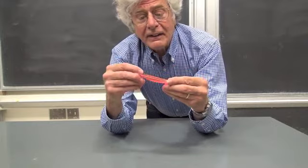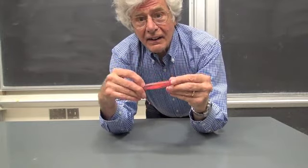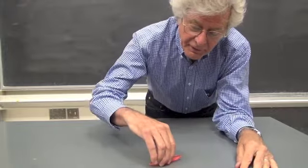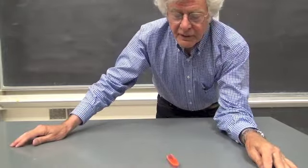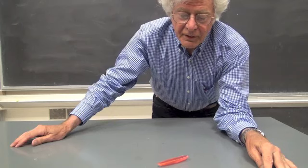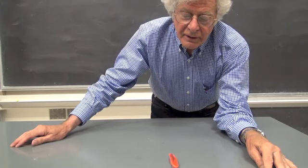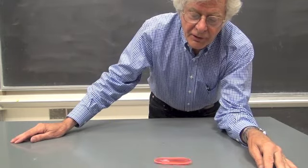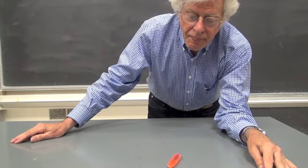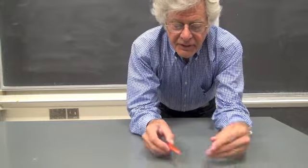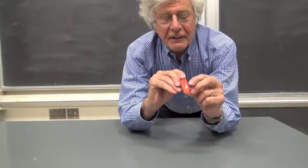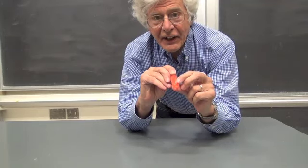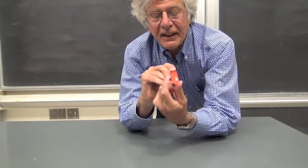This is a rattle back. It has a rather curious behavior: when spun in one direction it reverses, while spun the other way it simply rotates. This asymmetry can be traced to the fact that the shape of the bottom is not symmetric — it's higher on one side than the other.